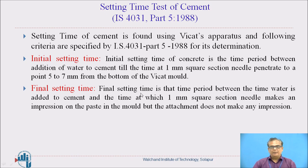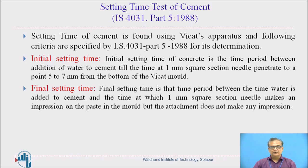What is final setting time? Final setting time is the time period between the time water is added to cement and the time at which the 1 mm square section needle makes an impression on the paste in the mold but the annular attachment does not make any impression. For final setting time, a different needle is used which has a pointed part with an annular attachment around it. Final setting time is that moment at which this needle makes an impression on the paste but the attachment fails to do so.